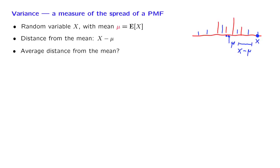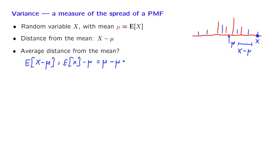Let us calculate the average or expected value of the distance from the mean. Using linearity of expectations, this is equal to the expected value of x minus the constant mu. But the expected value is, by definition, equal to mu, and so we obtain 0. The average value of the distance from the mean is always 0, and so it is uninformative.